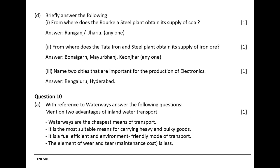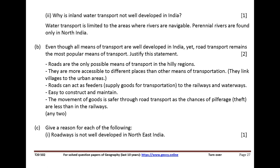Question 10. With reference to waterways answer the following questions. Mention two advantages of inland water transport. Waterways are the cheapest means of transport. It is the most suitable means for carrying heavy and bulky goods. It is a fuel-efficient and environment-friendly mode of transport. The element of wear and tear and maintenance cost is less. Why is inland water transport not well developed in India? Water transport is limited to areas where rivers are navigable. Perennial rivers are found only in North India.